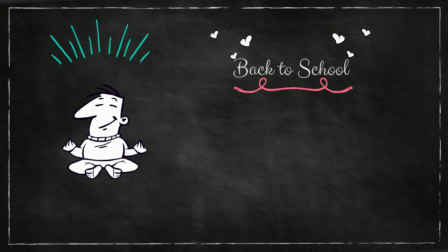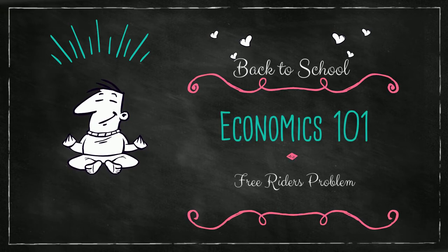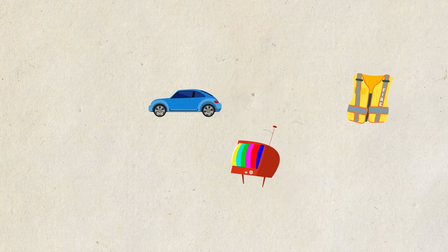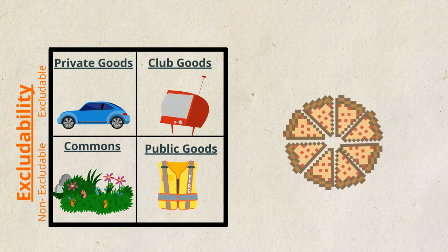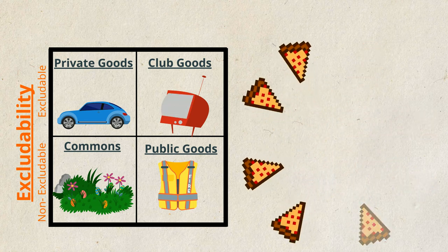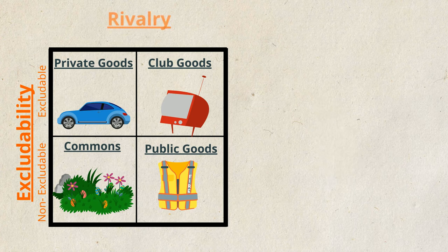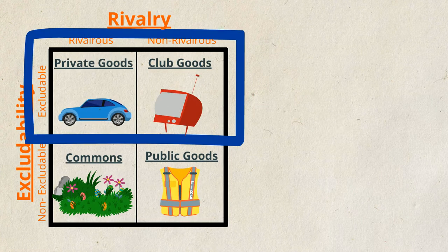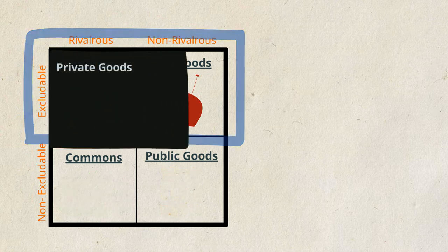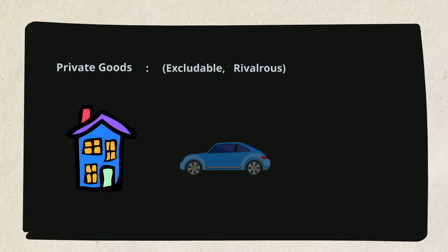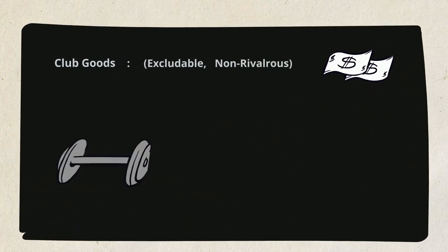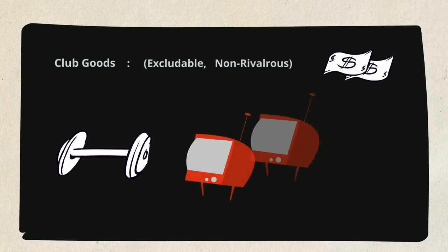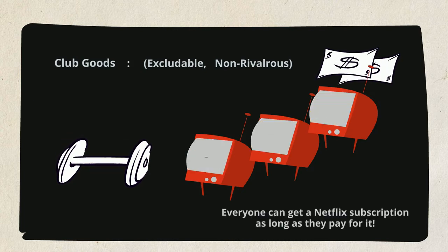To understand the free rider problem, we will have to look into some basic economics. Economic goods are classified into four categories based on how easy it is to access them — excludability — and whether or not the use by one person reduces someone else's ability to use them — rivalry. In the excludable category, we have private goods and club goods. Private goods can only be used by people who have purchased them, like a house, a car, or a smartphone. Club goods are a set of goods which can only be used by people who have paid a membership fee to access them, like a gym membership or a Netflix subscription, but the use by one person doesn't affect anyone else's ability to use them as well.